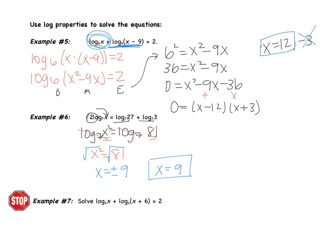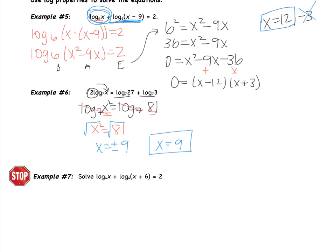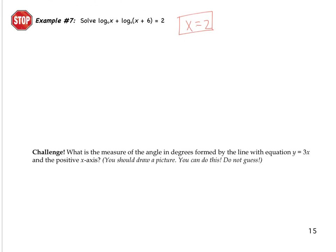The steps for these problems are: condense into one log, then either the logs cancel or you switch to exponential form. Example 7 next to the stop sign is your turn — it's very similar to example 5. Pause the video and come back when you have an answer. You should get x equals 2; two answers come up but one doesn't work. Have that problem completed for tomorrow with all work shown — just an answer without work will not get credit. If you're looking for an extra challenge, try the bonus question using advanced algebra and geometry. If you have questions, star, circle, or bold them to ask tomorrow. Bye.